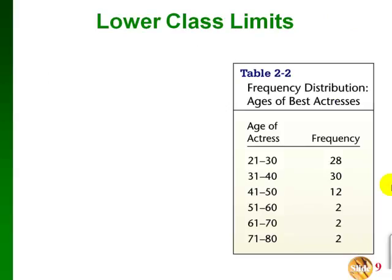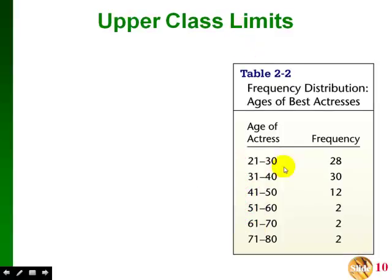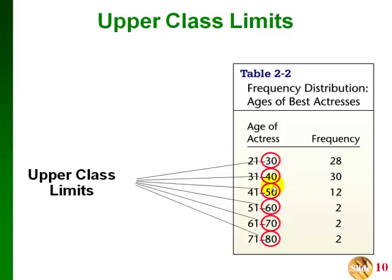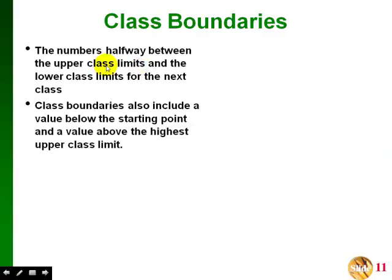The lower class limits are the values on the left — 21, 31, and so on, each going up by 10. The upper class limits are the values on the right — 30, 40, 50, 60, and so on. Other values you might need are class boundaries, which are the numbers halfway between the upper class limits and the lower class limits of the next class. Class boundaries also include a value below the starting point and a value above the highest upper class limit.